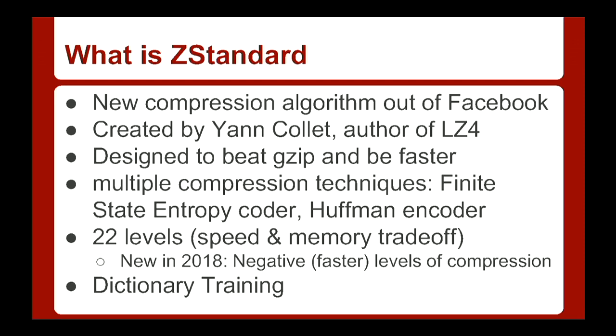ZStandard also has a dictionary training mode. If you have a large series of JSON messages with the same structure — the same set of keys — ZStandard can learn about the format of the message and the parts that are the same every time. By training it with that, you can create compression that's even faster and better, because you know the internal structure of the message and can remove even more bits. Eventually, an extra HTTP header will point to the dictionary file that you feed in with the compressed data, showing ZStandard how to decompress it even faster.